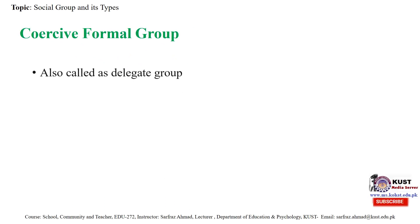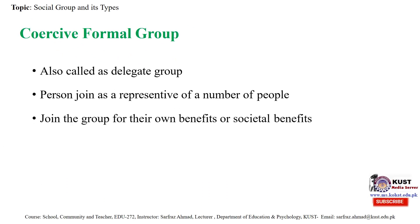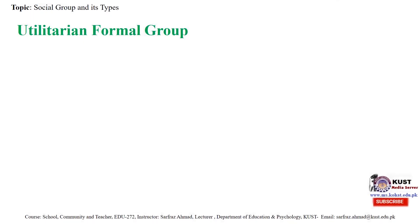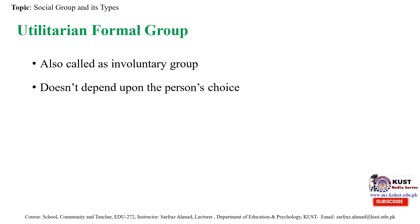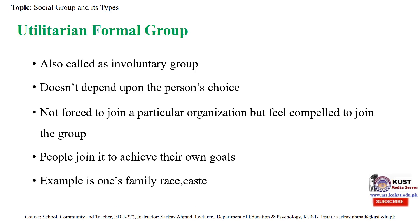Coercive formal groups, also called delegate groups, are those where persons join as a representative of a number of people, joining for their own benefit or societal benefit. Like in a village, we make committees and participate in them willingly. Persons are either elected or nominated by some power; an example is parliament. Utilitarian formal groups, also called involuntary groups, are those where the person is not forced but feels compelled to join to achieve their own goals. Examples are one's family, race, and caste.